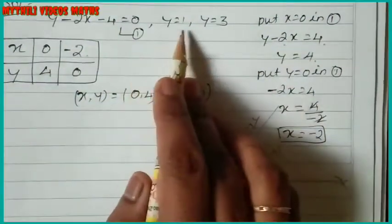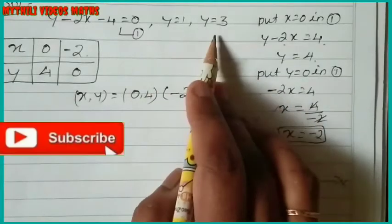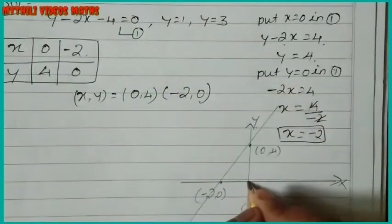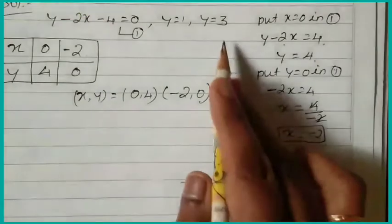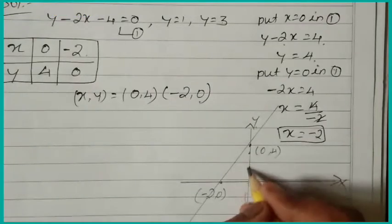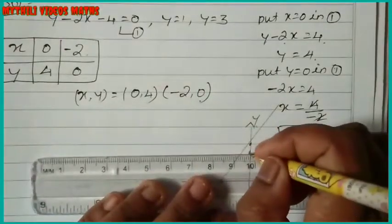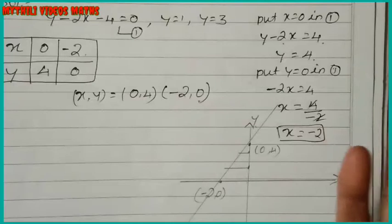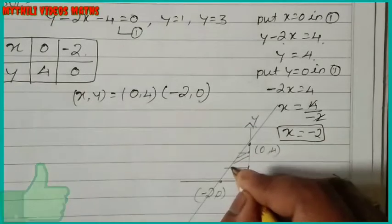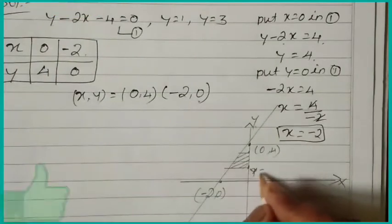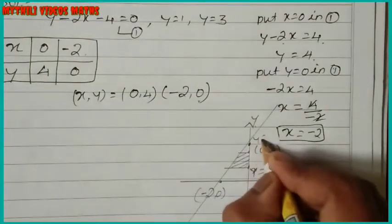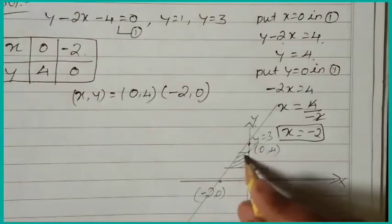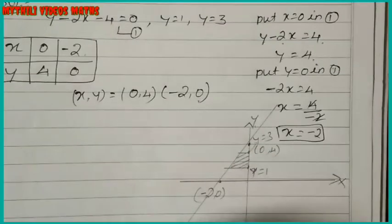They have also given two boundary lines: y equal to 1 and y equal to 3. On the y-axis, mark y equal to 1 and y equal to 3 and draw horizontal lines through these points. The bounded region is the area between y equal to 1 and y equal to 3, enclosed by the line and the y-axis.